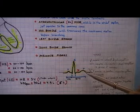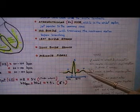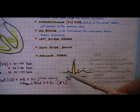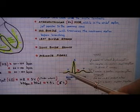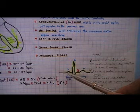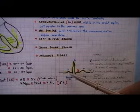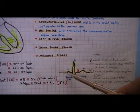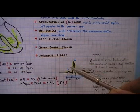Then we have the T wave. The T wave represents the ventricular repolarization. Then we have the intervals. The first interval is called the PR interval, and you have to measure from the beginning of the P wave until the beginning of the Q wave. Sometimes we get confused because we want to measure from the beginning of the P wave until the R wave, which is wrong.